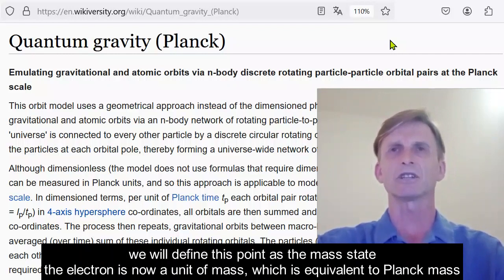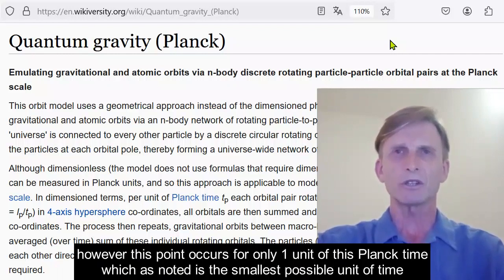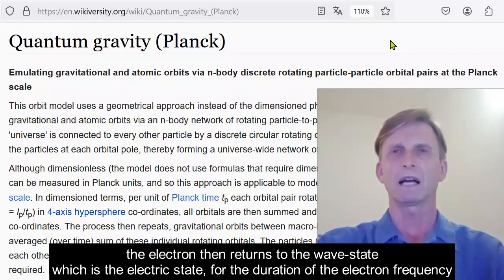We will define this point as the mass state. The electron is now a unit of mass, which is equivalent to Planck mass. However, this point only occurs for one unit of this Planck time, which, as noted, is the smallest possible unit of time. The electron then returns to the wave state, which is the electric state, for the duration of the electron frequency.